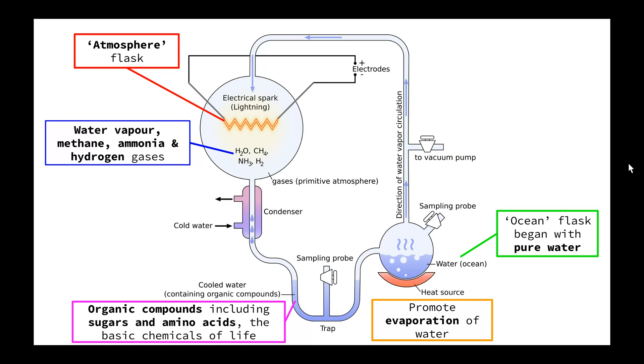This here shows the setup that Urey and Miller had in their laboratory. It is made up of fairly simple equipment that you would find in most standard laboratories today. Starting over here, we had a round-bottom flask that had water in it to represent the ocean. Initially, they placed pure water into this flask and heated it with something similar to a Bunsen burner, which promoted evaporation of the water.